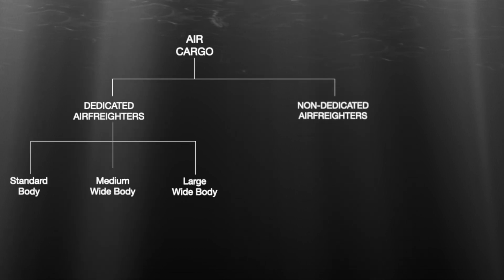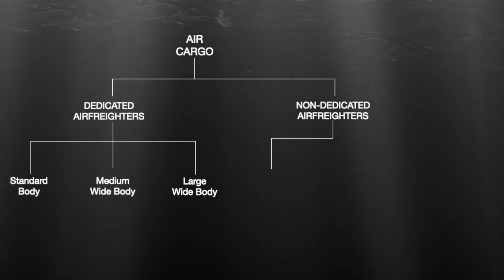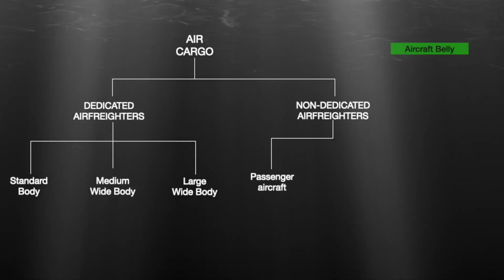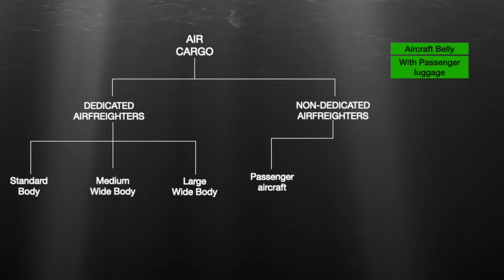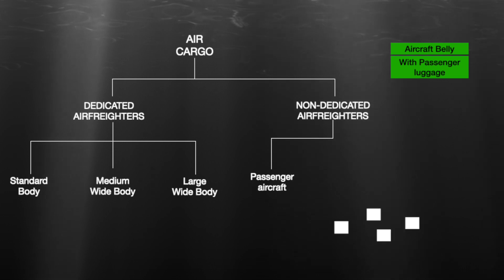On the other hand, we have non-dedicated air freighters. These aircraft are primarily designed for transporting passengers. We have regular passenger aircraft which also carry cargo alongside passengers. Typically, cargo is stored in the aircraft's belly along with passenger luggage. This cargo can either be loose freight shipped piece by piece, or palletized in larger aircraft.